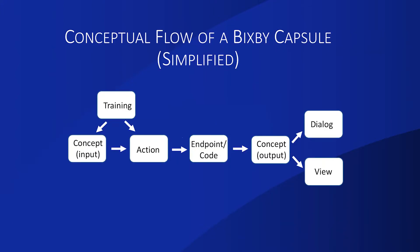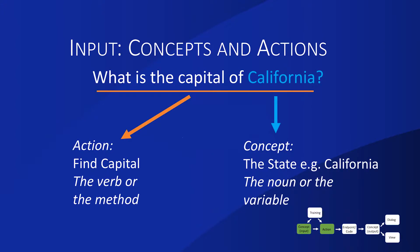This is the conceptual flow of a Bixby capsule. I'm going to go over each part individually — this covers everything you need to build a Bixby capsule. To develop this capsule, we first need to define our input. In 'what is the capital of California,' California is that input variable, and in Bixby you call it a concept. Then we need an action — we'll call ours 'find capital.' That's the verb or method in traditional programming. Embedded in the question is the action 'find the capital' and the concept 'California' itself. Those are the input concepts and actions.